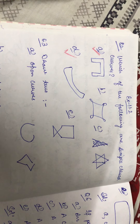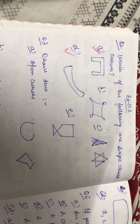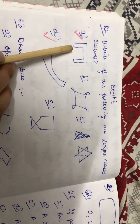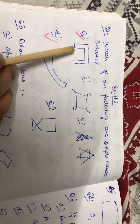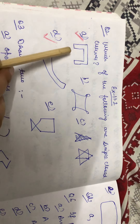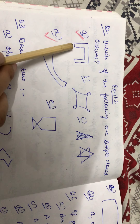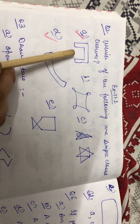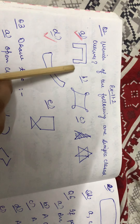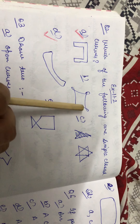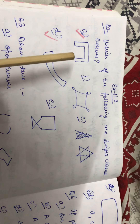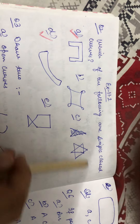Which of the following are simple closed curves? We have 5 curves here. In the A part it is not intersecting and it is closed also. The initial and the final points are same. So this is a simple closed curve. In the B part the curve is intersecting, so it is not a simple closed curve.